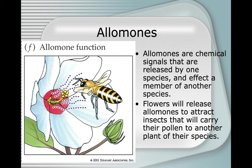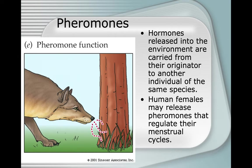Alamones are chemical signals that are released by one species and affect a member of another species. Flowers will release alamones to attract insects that will carry their pollen to another plant of their species.